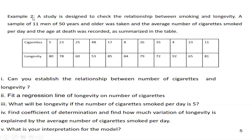This is example two, because the first example was age and height. This is the study of smoking habit and longevity — that is, how many years people who smoke are going to live, which is the age they are going to die. We took a sample of 11 men who are 50 years or more and smoke cigarettes. This is the number of average cigarettes taken per day and how many years they lived.